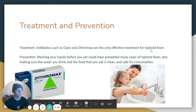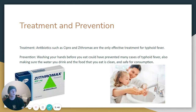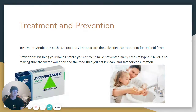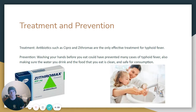Treatment and prevention: antibiotics such as Cipro and Zithromax are the only effective treatment for typhoid fever. It's prevented by basic hygiene — washing your hands before you eat and making sure that the food and water you consume is safe. If you travel to a country where typhoid fever is prevalent, it may be a good idea to bring tablets that can purify water, or boil it.